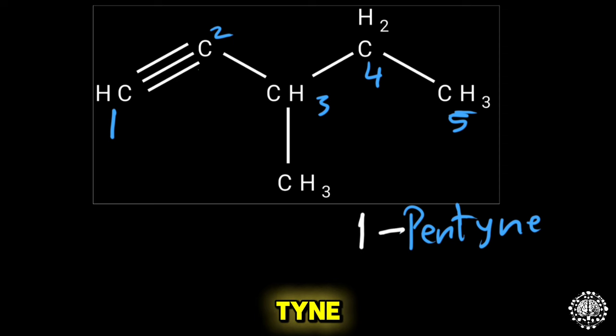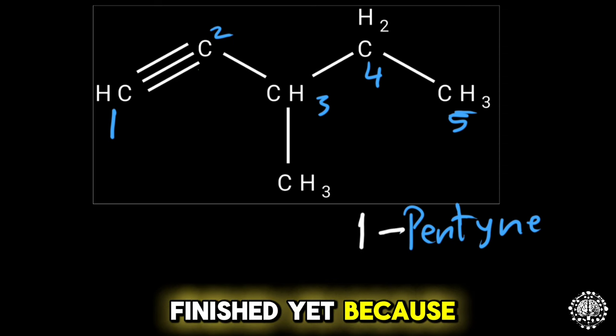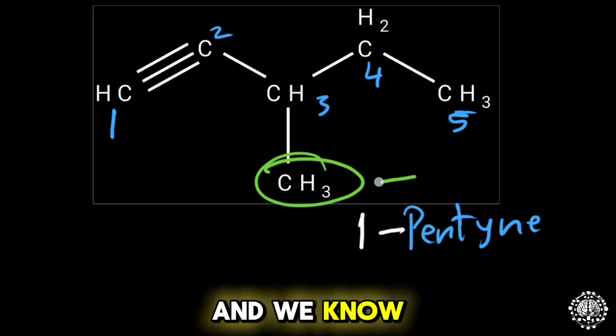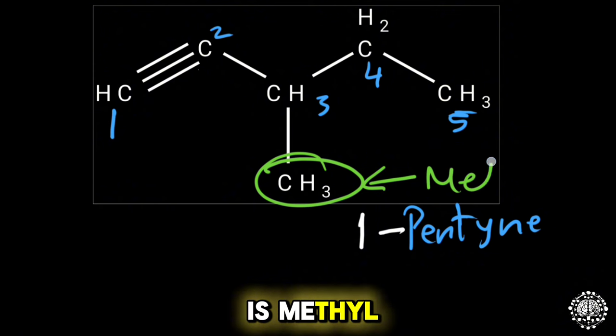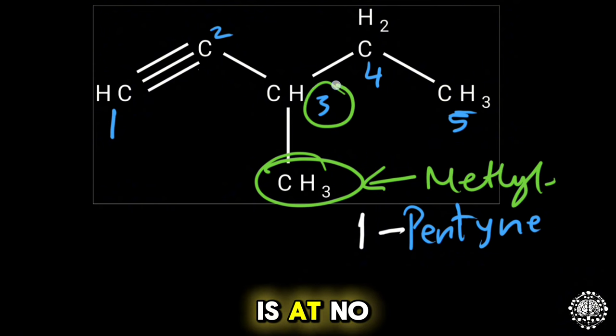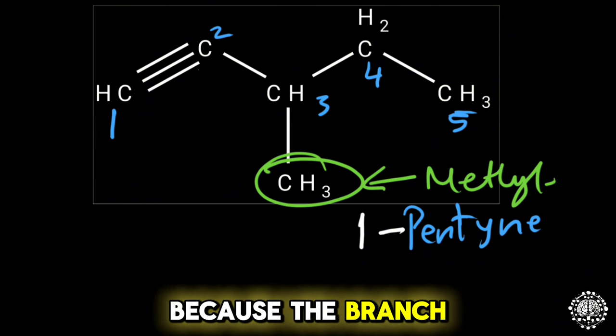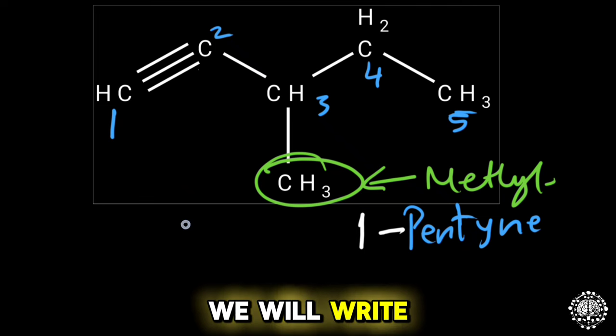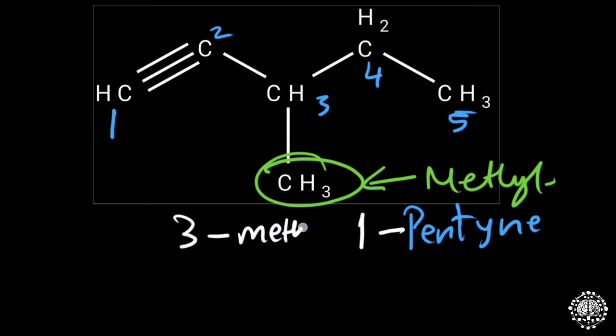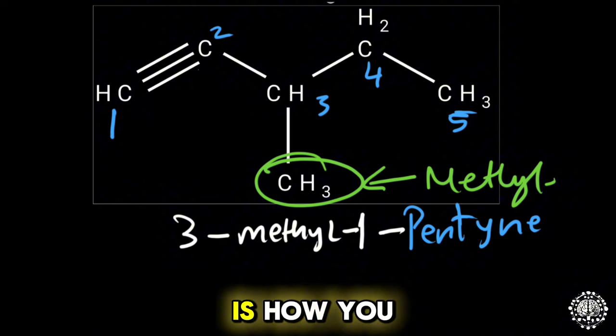Now we are not finished yet because we have a branch here, and we know that this branch is methyl. And the branch is at number three. Because the branch is at number three, we will write here 3-methyl, and that is how you can simply name the alkyne.